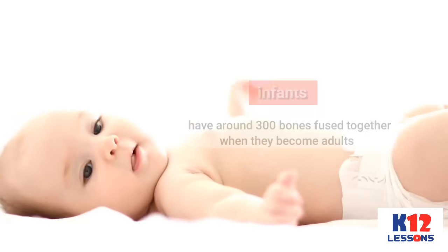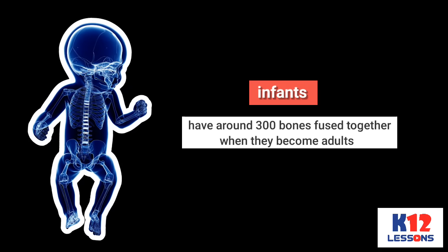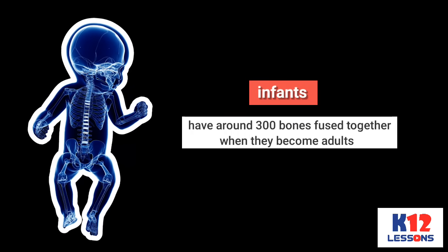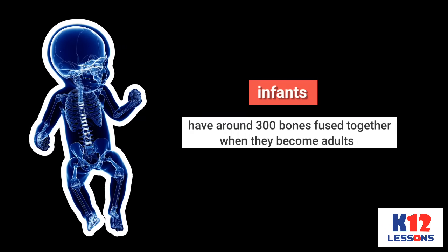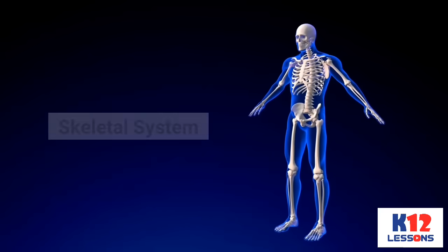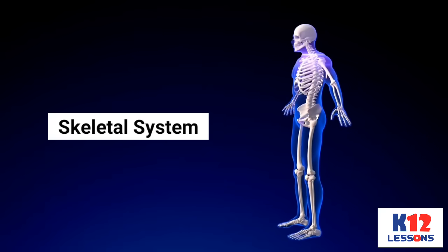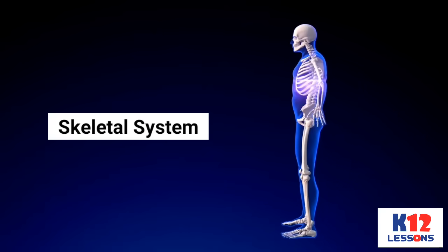At birth, infants have around 300 bones, which fuse together as they become adults. These bones work together as a system called the skeletal system.